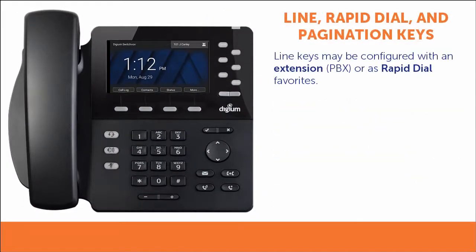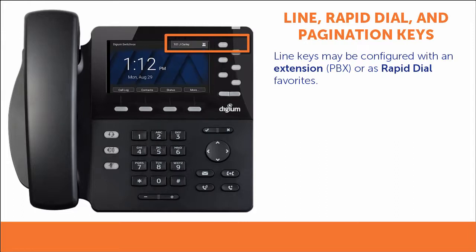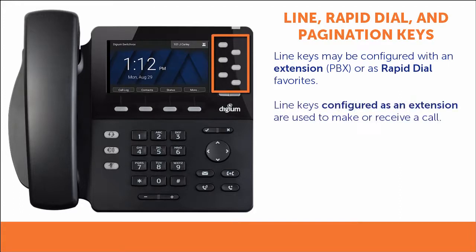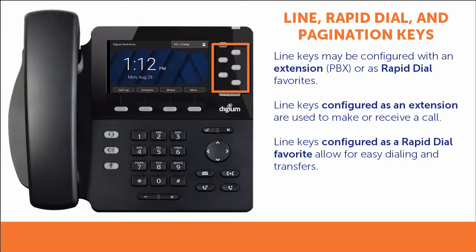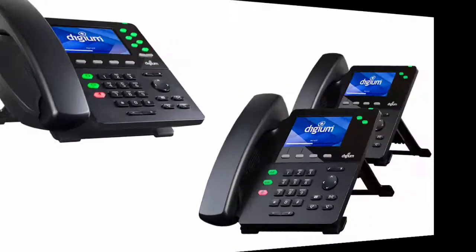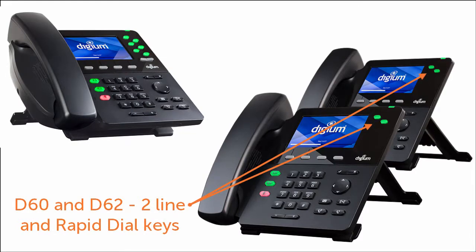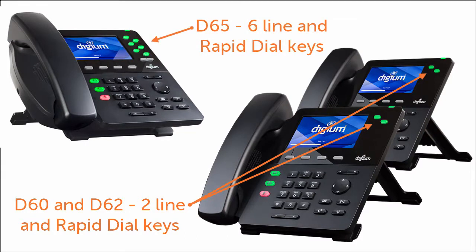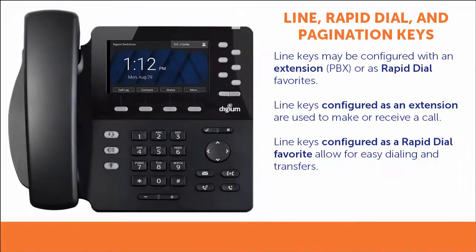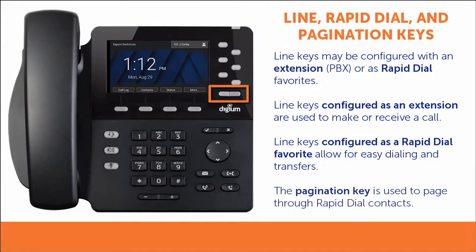To the right of the display are the line keys, the rapid dial keys, and the pagination key. The first line key is always the phone's main extension. The other line keys can be used as extensions or for rapid dial. Line keys are used exclusively for making and receiving calls, while rapid dial keys are used for easy dialing and transfers. The D60 and D62 feature two line and rapid dial keys, while the D65 features six. The D65 also has a pagination key that allows you to page through multiple keys of rapid dial contacts.